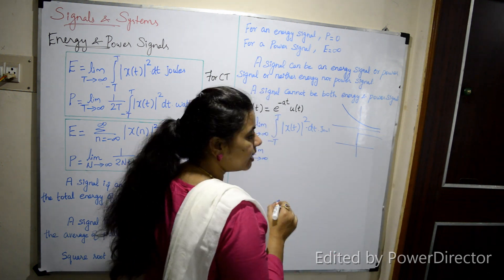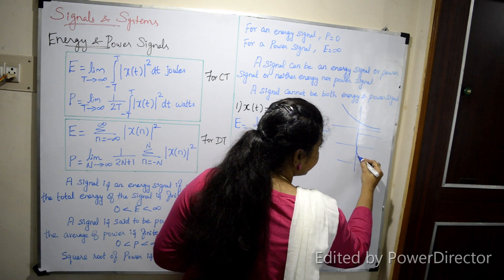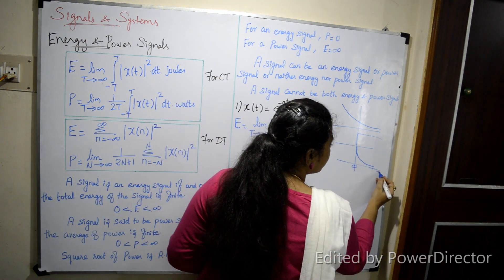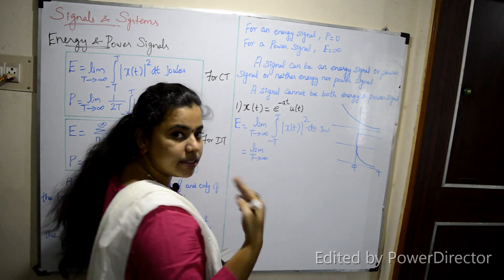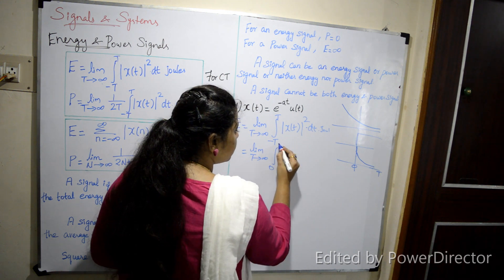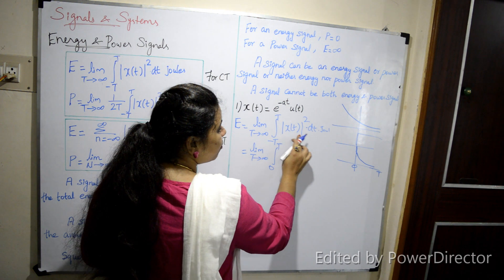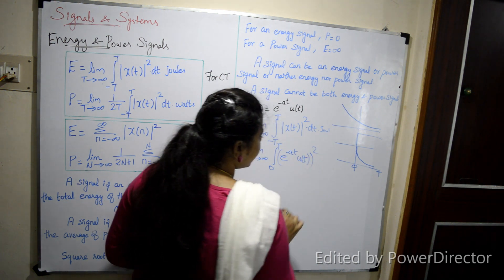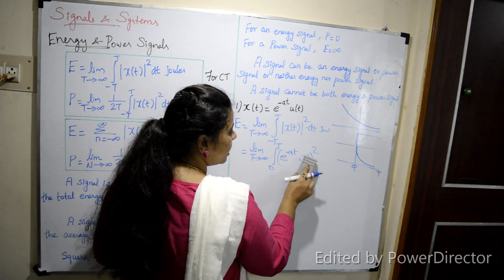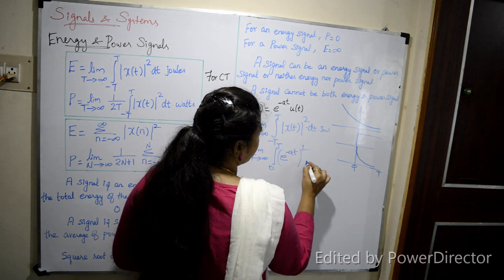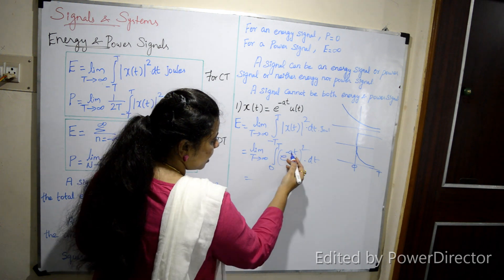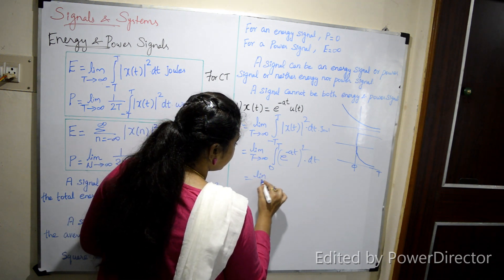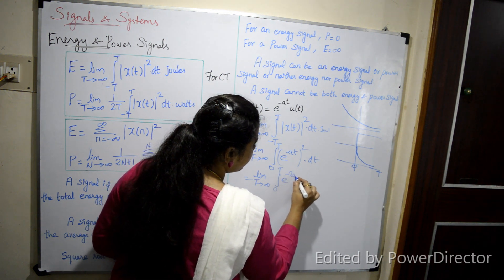For the signal x(t) = e^(−at)·u(t), since u(t) is defined for t ≥ 0, the limit changes to 0 to T. We substitute x(t) = e^(−at)·u(t) into the energy formula. Since u(t) = 1 for t ≥ 0, we get E = integral from 0 to T of |e^(−at)|² dt = integral from 0 to T of e^(−2at) dt.